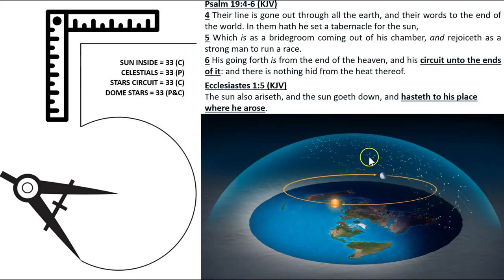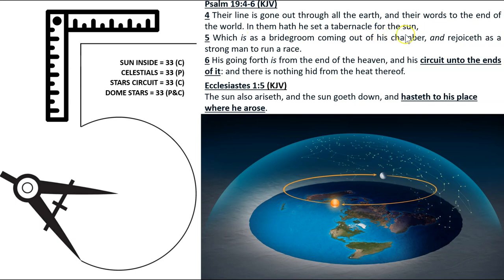The lights of the stars are fixed to the dome, which rotates around the earth like a chandelier, with Polaris the north star situated directly above the north pole centre. The sun and moon are inside the dome and make their circuits over the flat, stationary earth. Psalm 19:4-6: 'Their line is gone out through all the earth... In them hath he set a tabernacle for the sun, which is as a bridegroom coming out of his chamber... His going forth is from the end of the heaven, and his circuit unto the ends of it.' Ecclesiastes 1:5: 'The sun also ariseth, and the sun goeth down, and hasteth to his place where he arose.' Sun inside, celestials, stars circuit, dome stars — 33.